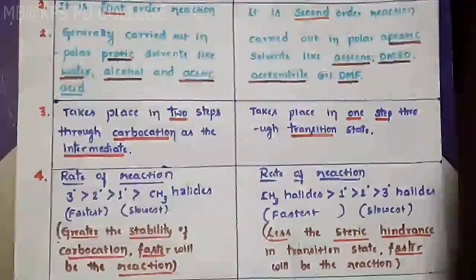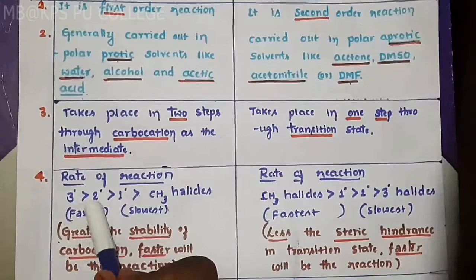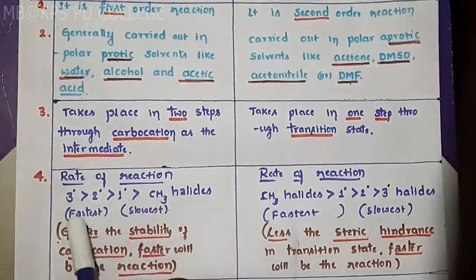Moving to the fourth point: rate of reaction in SN1. The reactivity order is tertiary is greater than secondary, secondary is greater than primary, and primary is greater than methyl halides. So tertiary is greater than secondary — these two are the fastest.